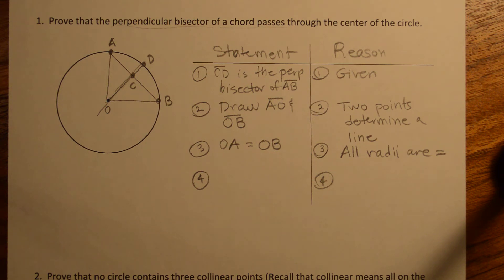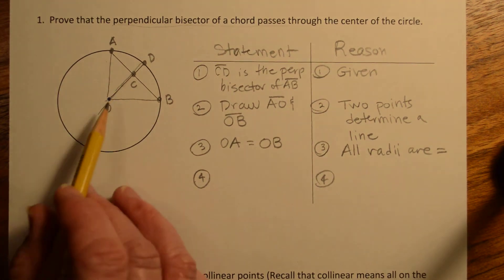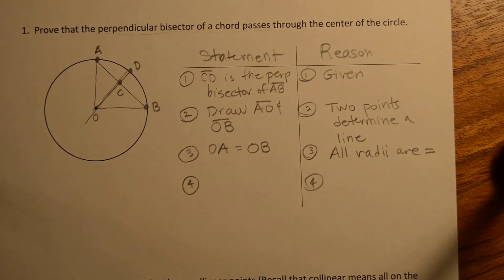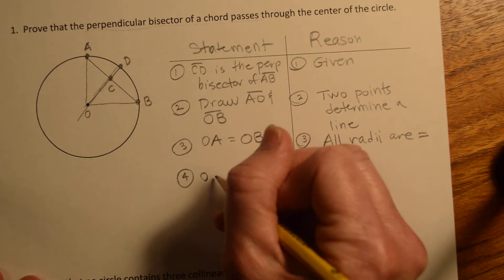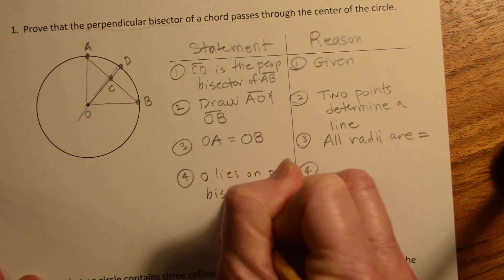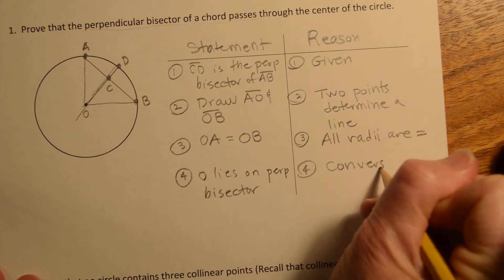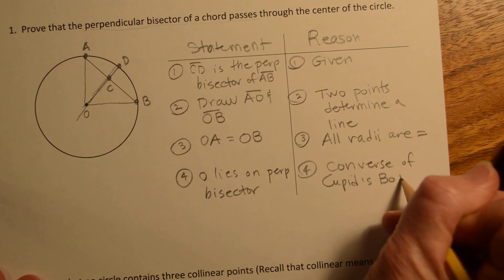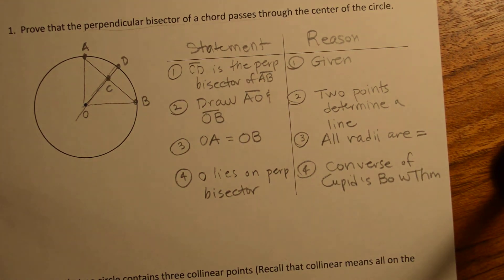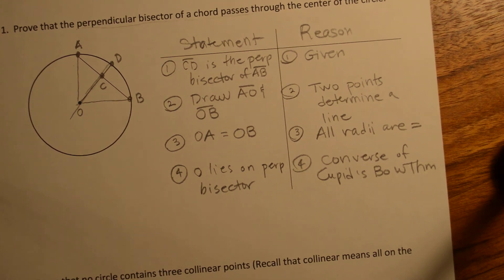And I need to find that lovely picture in the book. Sorry. I should have marked this off first. All right, Converse of Cupid's Bow Theorem says, if any point is equidistant from the endpoints of a segment, then it must lie on the perpendicular bisector. So that is what we're using right here, that we have a point right here which is equidistant from the endpoints of a segment, and therefore it must lie on the perpendicular bisector.